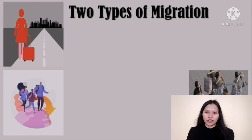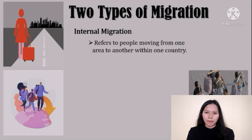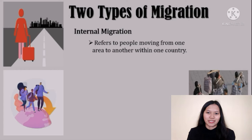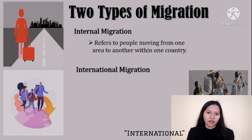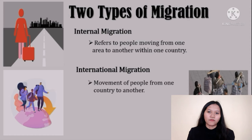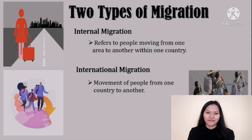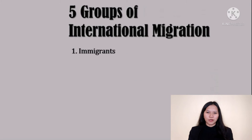There are two types of migration. First is internal migration — it refers to people moving from one area to another within one country. For example, a family living in Cebu will migrate to Manila for some reason. Second is international migration — it is the movement of people from one country to another. An example is an OFW who prefers to live abroad to have a more successful and better life.